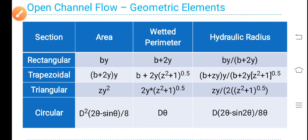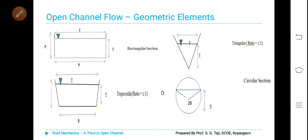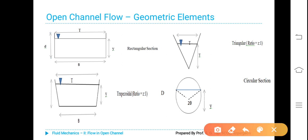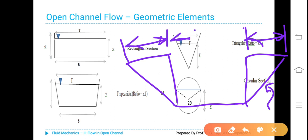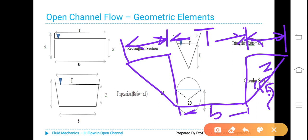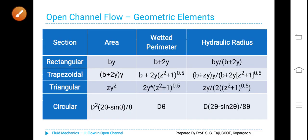The (Z squared plus 1) term appears because of the slope. For a trapezoidal section, if we take a 1-in-Z slope — meaning 1 vertical and Z horizontal — the inclined length is calculated by Pythagoras theorem. Since it is symmetrical, this horizontal distance can be computed, giving you the top width T equal to small b plus 2 times ZY. Therefore the inclined side length is (Z squared plus 1) to the power of 0.5.